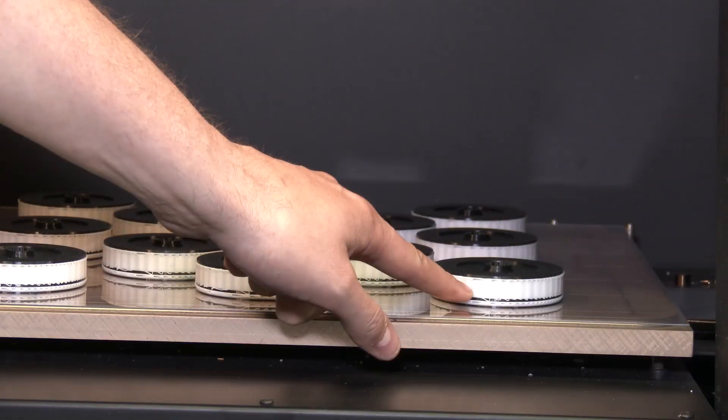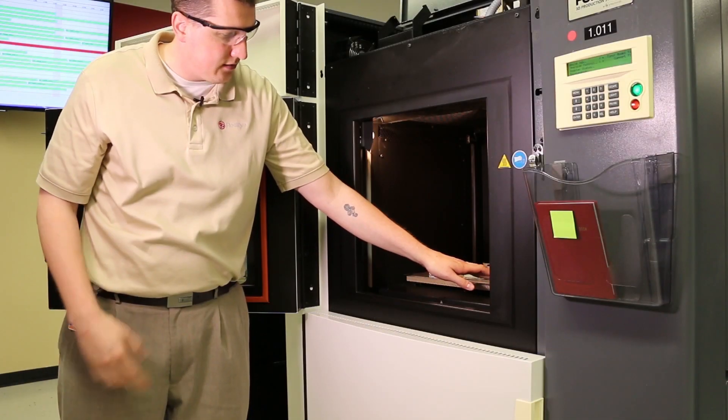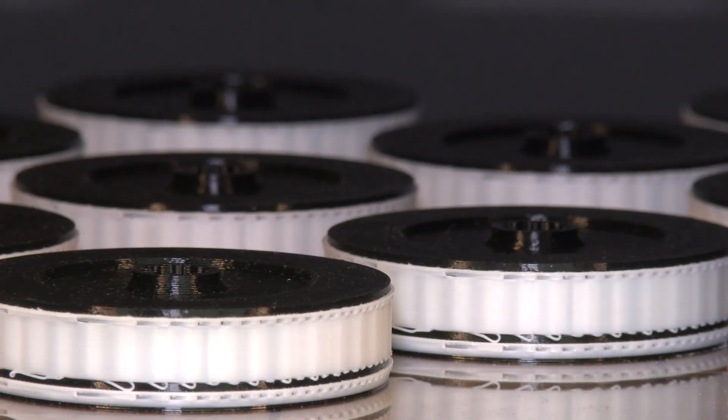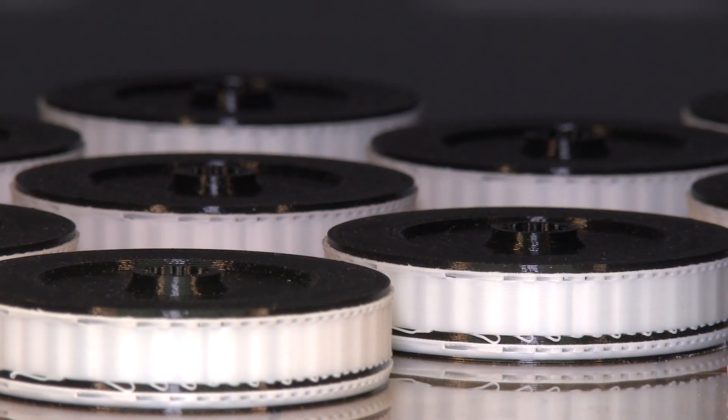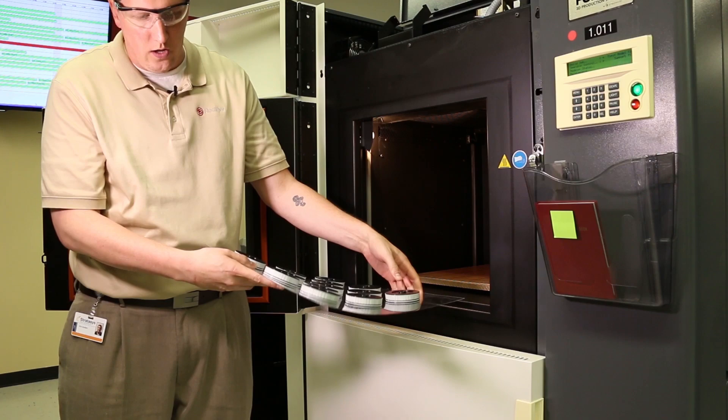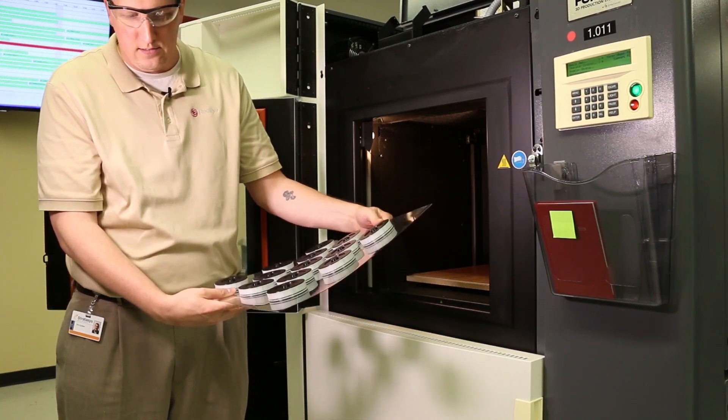And what you're seeing here is the black is the model and the white is the support material. The support material is needed for overhangs or any part of your geometry that cannot print on air. We break these from the sheet and we drop them and send them into our waterworks service. After about an hour or so all that support is removed and all that's left is the part.